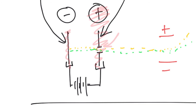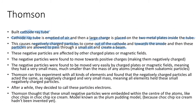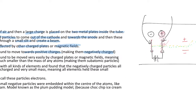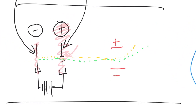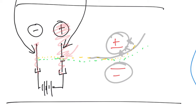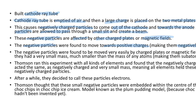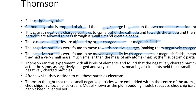So you've got the stream of yellow and green negative particles. These negative particles are then affected by other charged plates or magnetic fields. The negative particles were found to move towards the positive charge plate, meaning that they were negatively charged. What they found was that the negative particles were moved very easily by the charged plates or a magnetic field, which means that they have a very small mass.